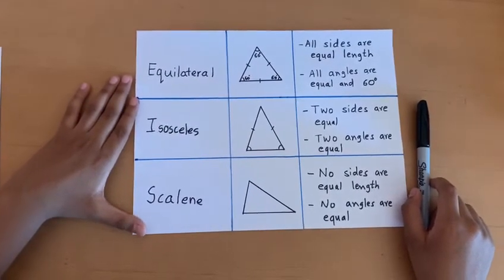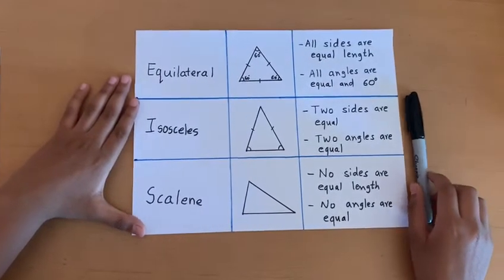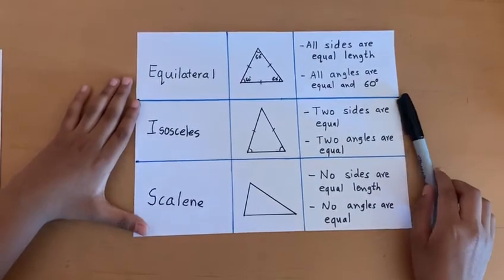If you didn't know, all the angles in a triangle add up to 180 degrees.